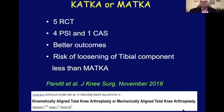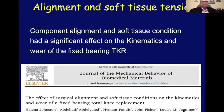Should we do a KATKA or a MATKA? In a paper by Pandit et al., five randomized controlled trials using several methods showed that the risk of tibial component loosening is higher in kinematic alignment compared to mechanical alignment. Alignment and soft tissue tension run hand in hand — component alignment and soft tissue condition have a significant effect on kinematics and wear of fixed-bearing total knee replacements, and this needs to be kept in mind when carrying out the procedure.